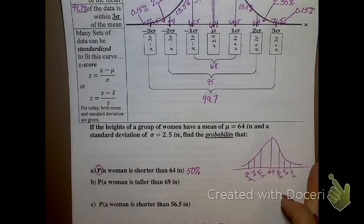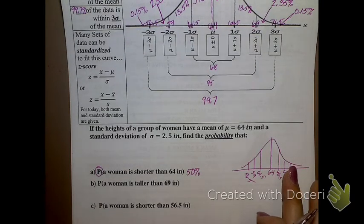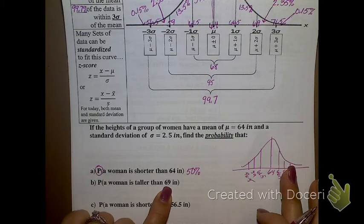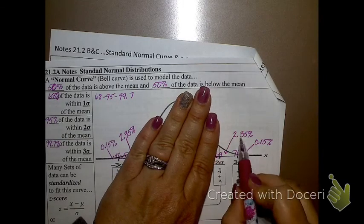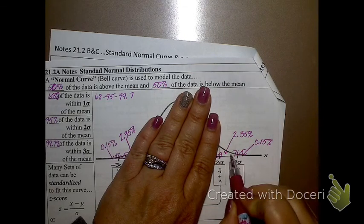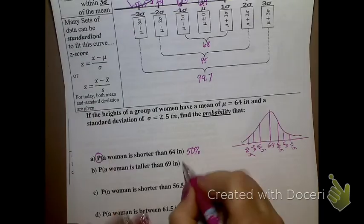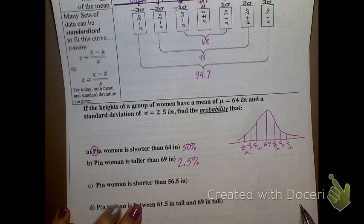So, what's the probability that a woman is shorter than 64 inches? 50%. The questions are very simple and very quick to answer, once you have your bell curve set up. What is the probability that a woman is taller than 69 inches? So, here's 69 inches. Which direction would taller than be? To the left or to the right? To the right. So, taller than would be 2.35 plus 0.15. What does that give me? 2.5%. 2.5%. Easy? Really easy.